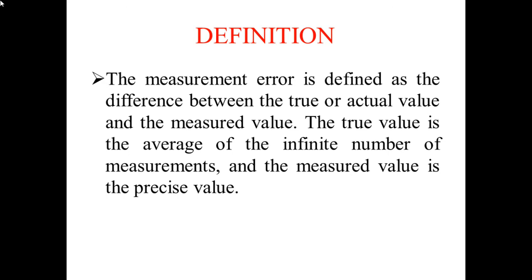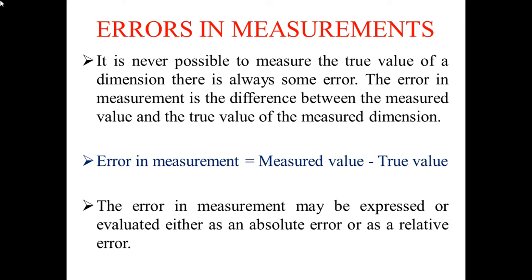It is never possible to measure the true value of a dimension; there is always some error. The error in measurement is the difference between the measured value and the true value of the measured dimension. Error in measurement equals measured value minus true value. The error may be expressed or evaluated either as an absolute error or as a relative error.